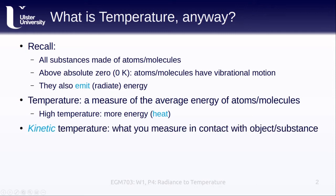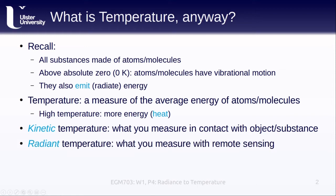We can think of an object's kinetic temperature as its true temperature, true in very heavy quotation marks here. This is the temperature that you measure if your thermometer is in contact with the substance, for example if you stick a thermometer under your tongue. The radiant temperature on the other hand is what we actually measure with remote sensing, and as you might have guessed by the fact that we're making this distinction, there is a difference.